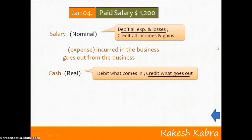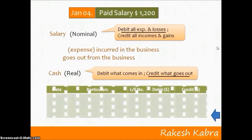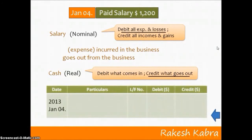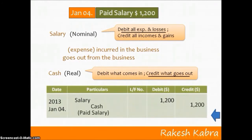Now let's pass the journal entry. The debit item is the Salary account, so we record Salary account and put the amount in the debit column. Then we record the credit item — Cash account — in the next line. Narration: paid salary.